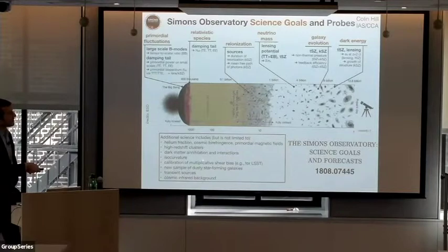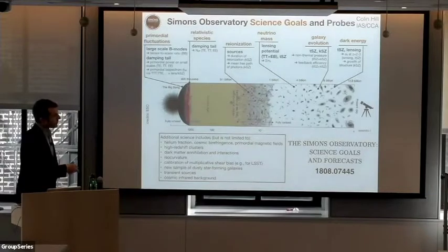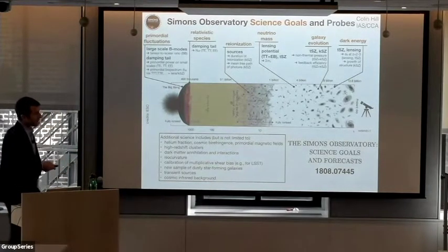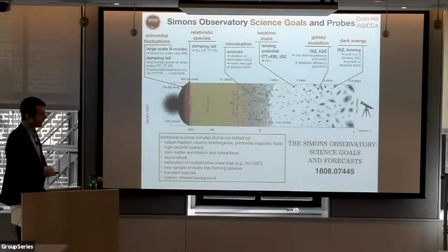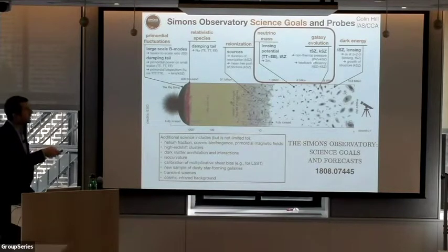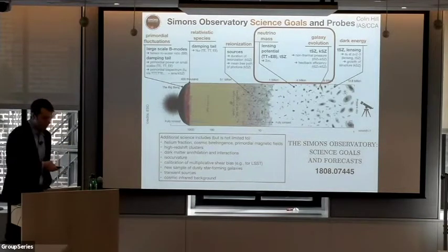Take a look at the lengthy paper we put out in August if you're interested in the full range of science. My own contributions spanned the entire range, particularly through producing foreground-cleaned noise curves that underlaid the forecasts for essentially all these observables. Today I'm going to focus on two topics: galaxy formation, and then neutrino masses.